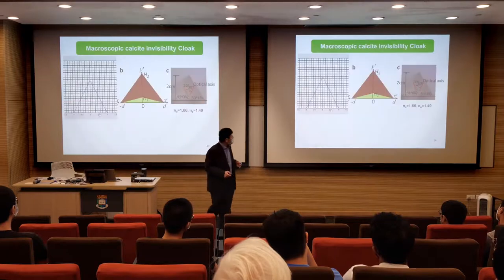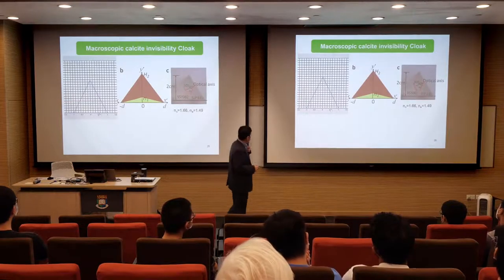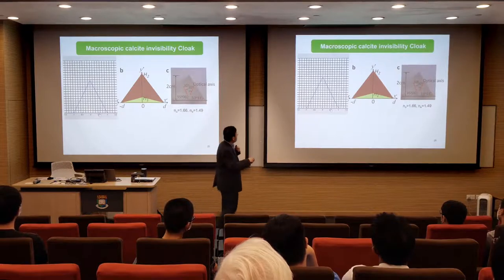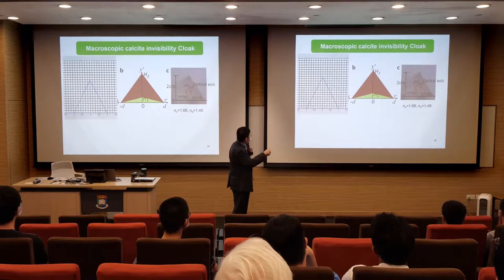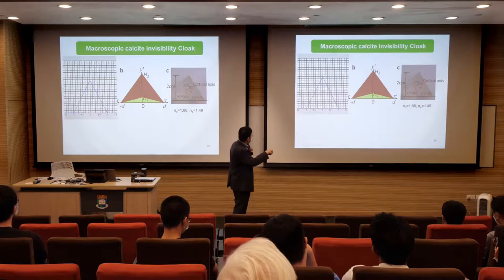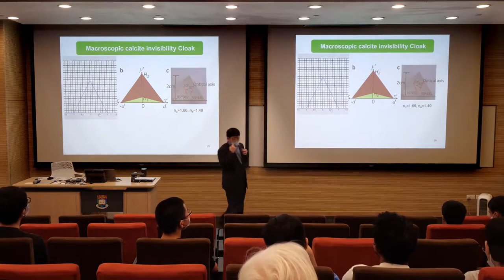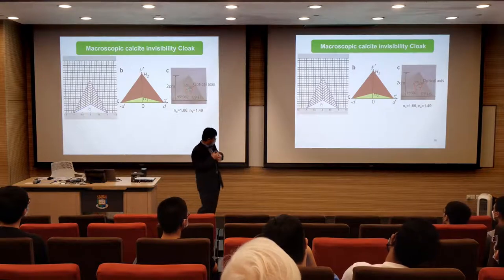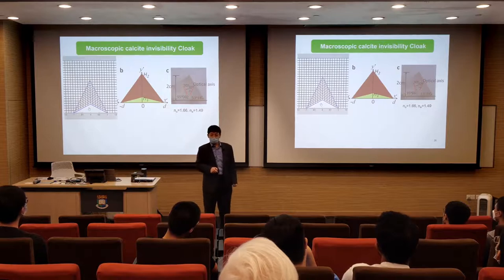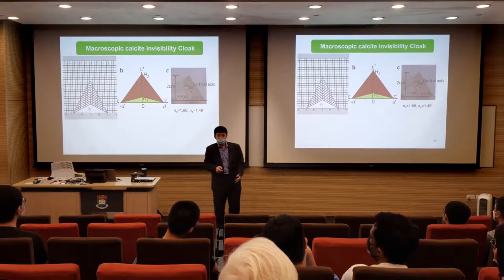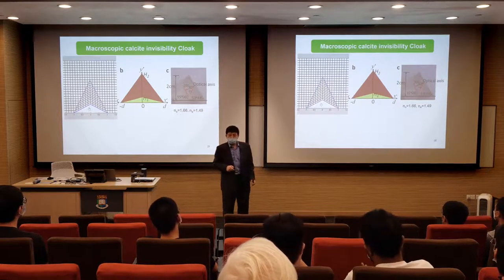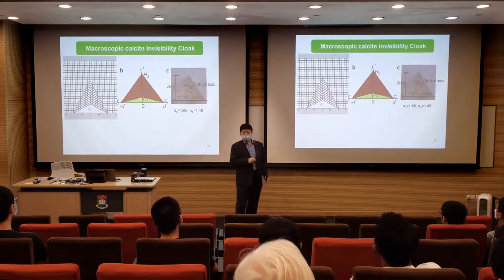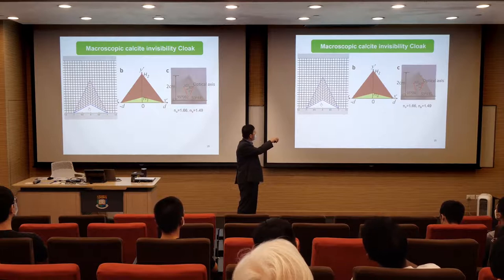Ten years ago, we made a simplified version. Starting from free space with square grids, we define a triangular region and do a simple transformation: we create a small triangular void and compress the optical space upward. Looking at the material properties in the cloaking region: first, it's homogeneous because all the shapes along each side are the same. But second, the squares are compressed into parallelograms — stretched along one direction and compressed along another. So this material must be anisotropic — we call it a birefringent crystal.